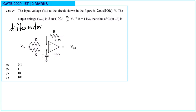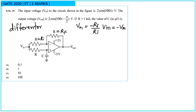There are two inputs: one to the inverting terminal and one to the non-inverting terminal, so we solve for both. For the inverting terminal, the output VO1 is simply −(RF/RI) × Vin. Since RF and RI are both equal to R, this becomes −Vin. Call this equation 1.